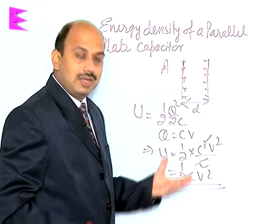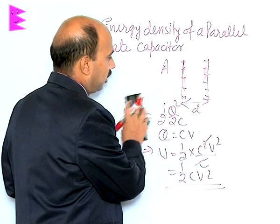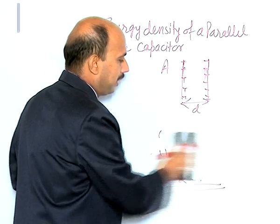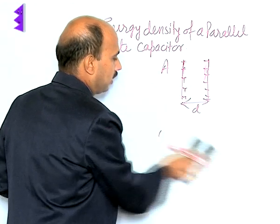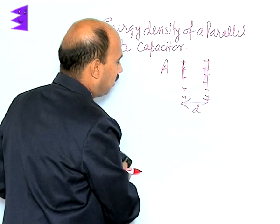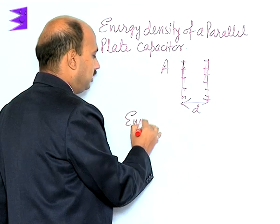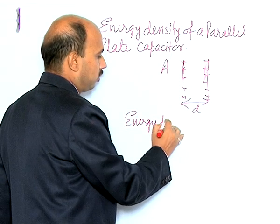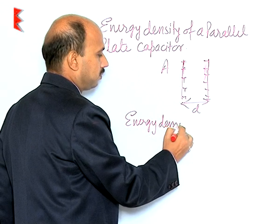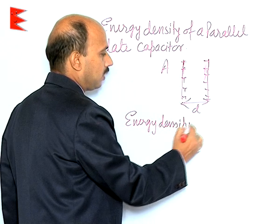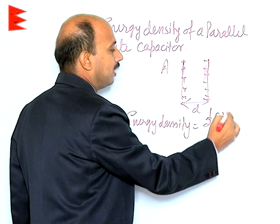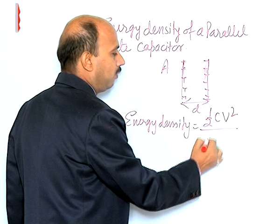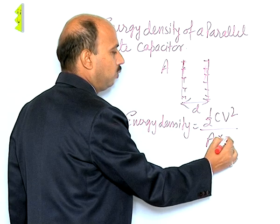We can now calculate the energy density of this capacitor. Energy density is equal to half CV squared — the energy of the capacitor — divided by the volume, which is A times d.